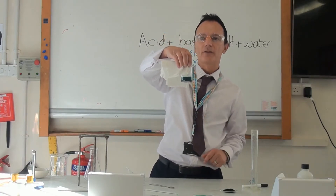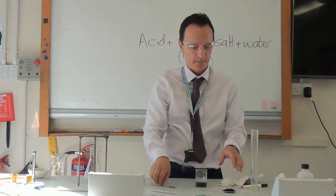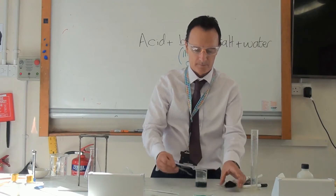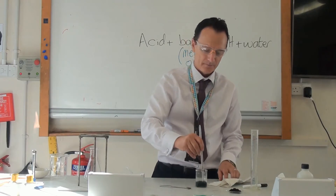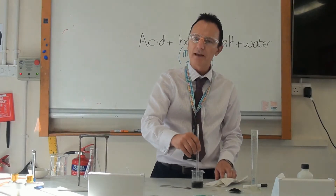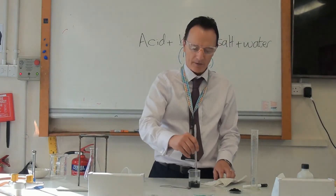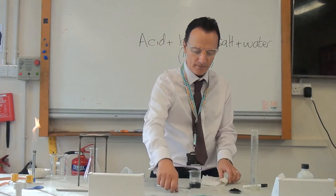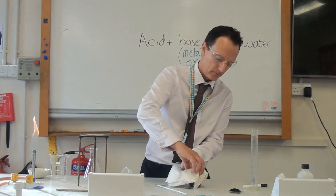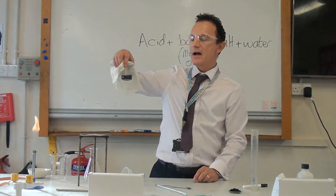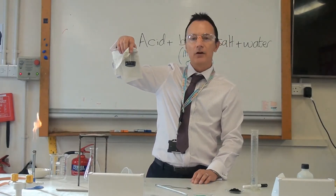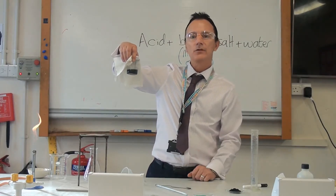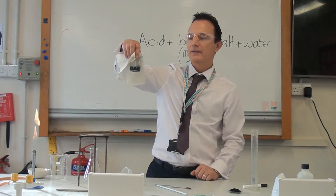We are going to add one more spatula of copper oxide and give it a stir. Because it has been warmed, it shouldn't take long for all the acid to react with the copper oxide to make our salt and water. In there now we will have our copper chloride salt, but we have also got too much copper oxide because we added too much deliberately to ensure all the acid has reacted.